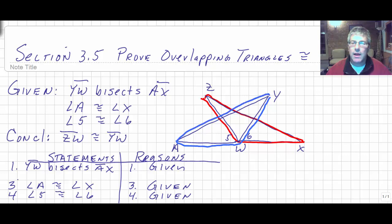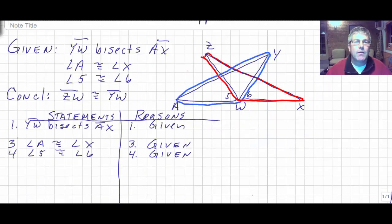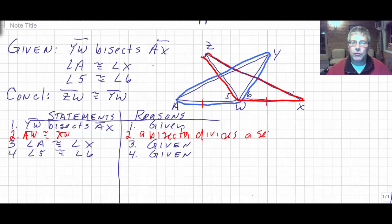So our first given is that YW bisects segment AX. So YW is a bisector of AX. Well, I'll put tick marks in because we know a bisector is going to divide a segment into two congruent segments. So we can put right into our proof that segment AX is congruent to segment XW. And the reason is a bisector divides a segment into two congruent segments.